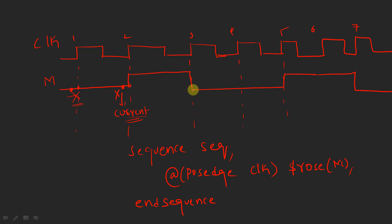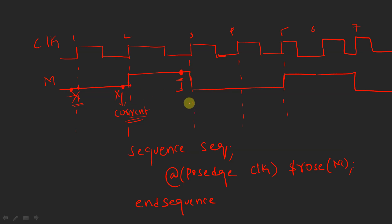At the third clock edge, before the posedge of the clock the value was equal to one. So at the current evaluation point the value is one, and at the previous evaluation point the value was zero — there is a rising edge transition. That is why the assertion passes at this clock edge.